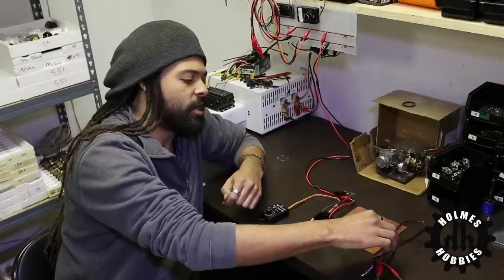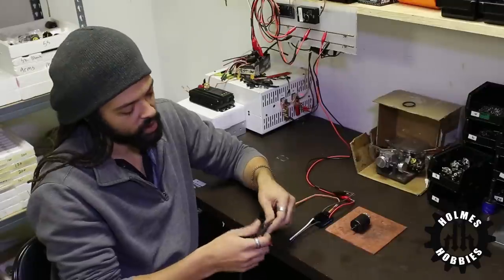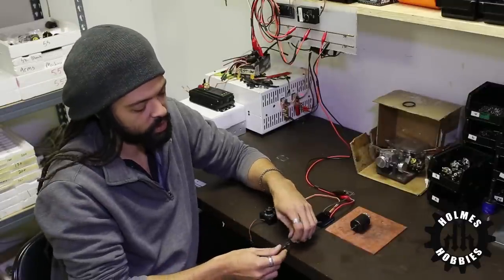When you initially calibrate your ESC, you want to have it hooked up to a motor. The ESC makes chimes and tones and it does that through the motor.